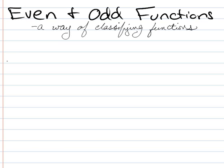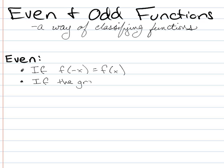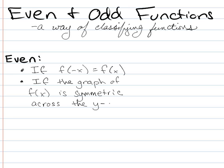So we're going to start out with two definitions. A function is even if either of the following occur: if f of negative x is equal to f of x, or if the graph of f of x is symmetric across the y-axis.